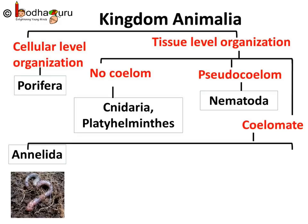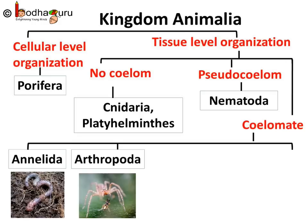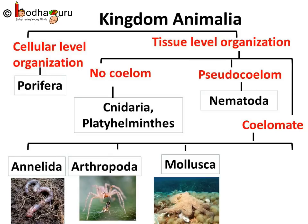In Annelida, the animal's body is made of ring-like segments. Next is Arthropoda — arthropods have a segmented body and jointed legs. Spider, cockroach etc. belong to phylum Arthropoda. Next is phylum Mollusca — they have an unsegmented soft body protected by a skeleton. Snail, octopus etc. belong to this phylum.